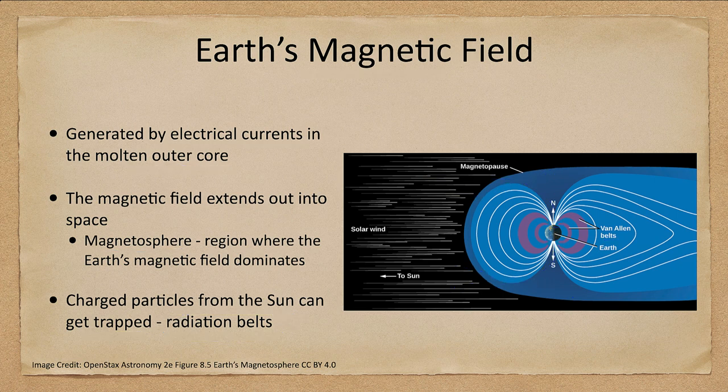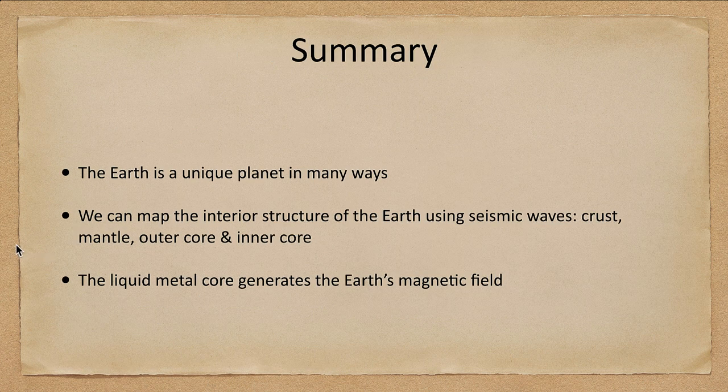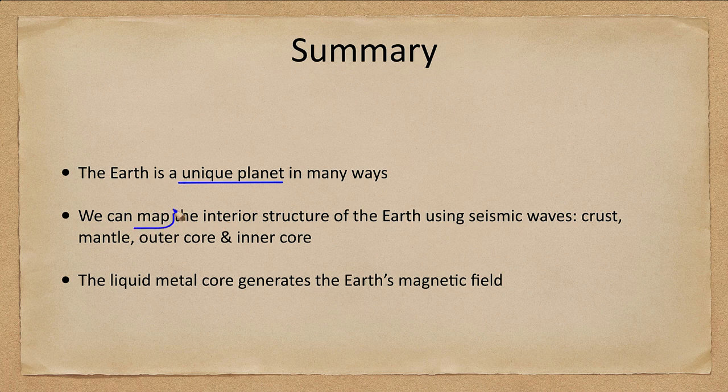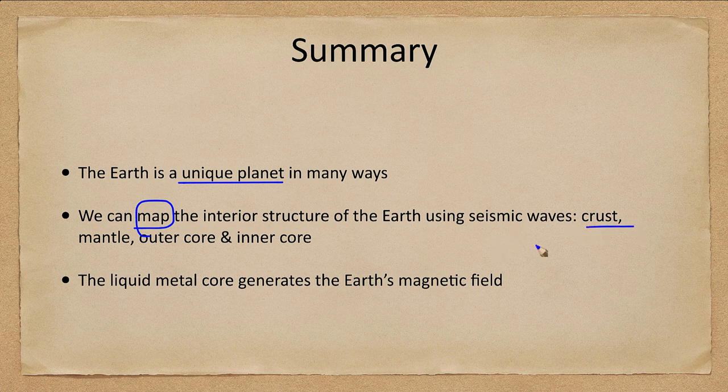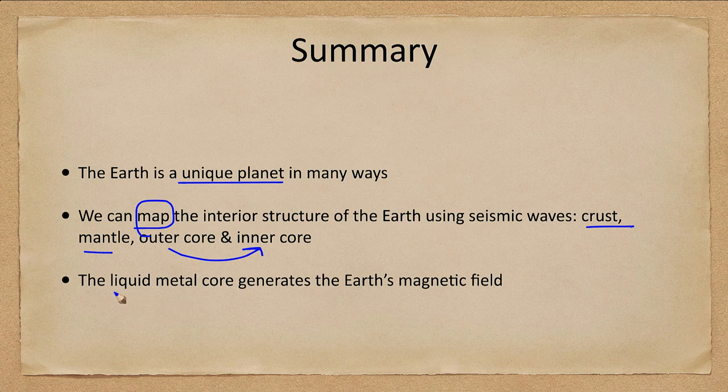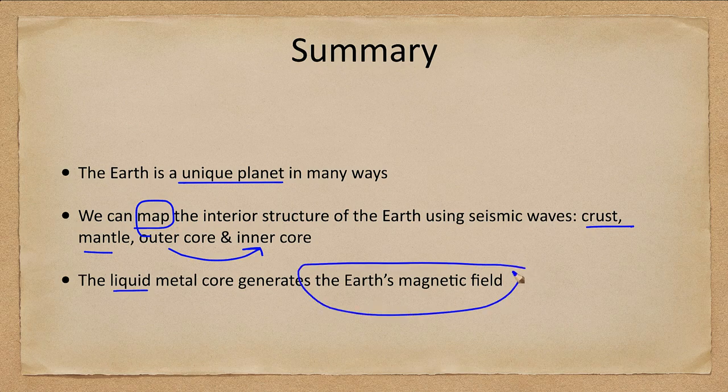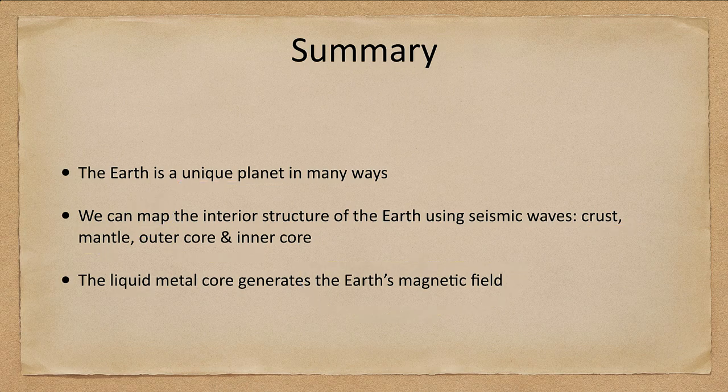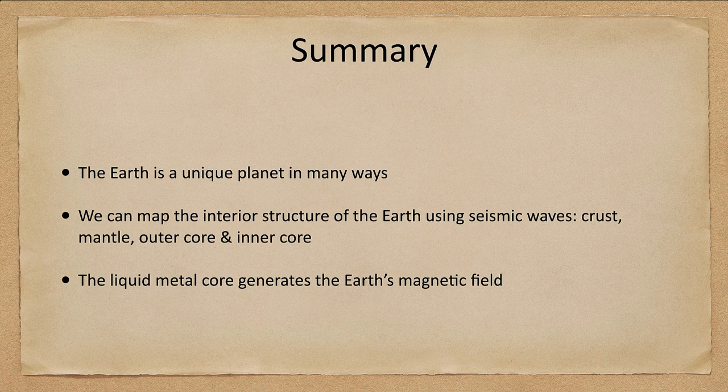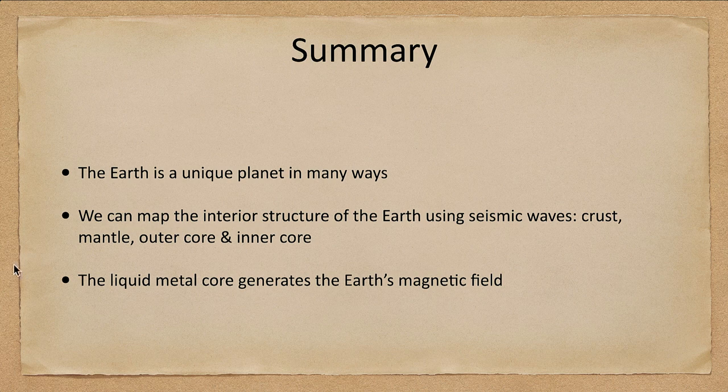So let's go ahead and finish up with our summary. And we looked at the interior of Earth and looked at how Earth is a unique planet in many ways. We learned how we can map the interior structure of Earth using seismic waves. And we found the crust, the mantle, and then the outer and inner cores. And we also looked at how the liquid portion of the outer core generates Earth's magnetic field, which helps protect us from charged particles from space. So that concludes this lecture on Earth's interior structure of the Earth. We'll be back again next time for another topic in astronomy.